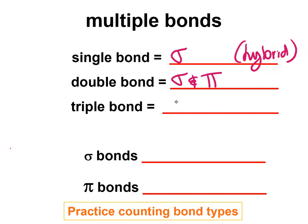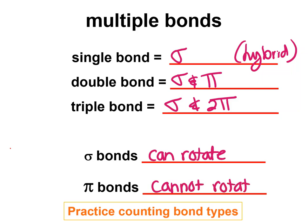Remember that sigma bonds are from the hybrid, and pi bonds are from the p orbitals.